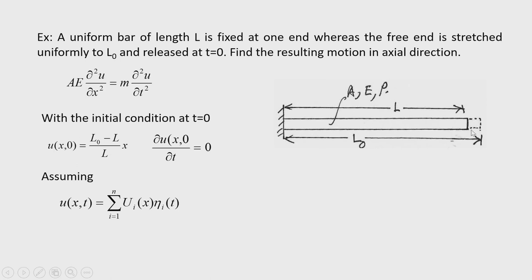At t = 0 this remains the initial configuration of the bar, and the initial velocity is zero. We are required to find the resulting motion. For the free vibration equation, using modal superposition, we assume u(x,t) = Σᵢ Uᵢ(x) ηᵢ(t), where ηᵢ is a generalized time-dependent coordinate and Uᵢ(x) is the mode shape. This solution is substituted into the equation of motion and decoupled using the orthogonality condition.